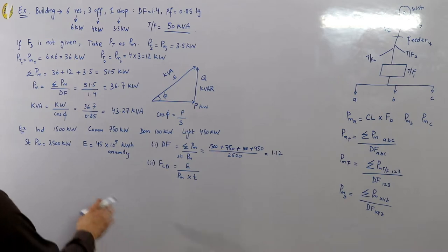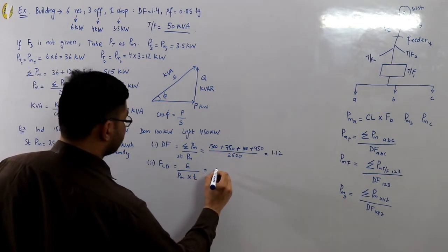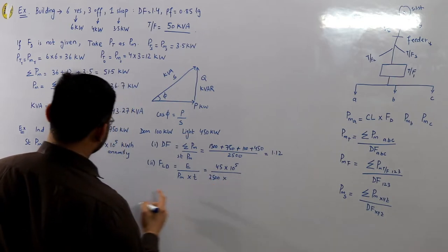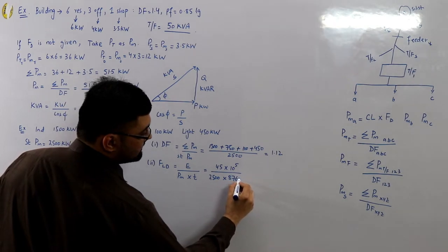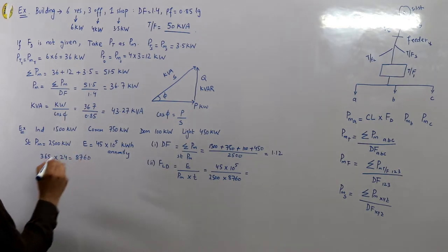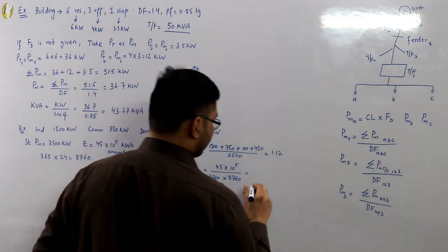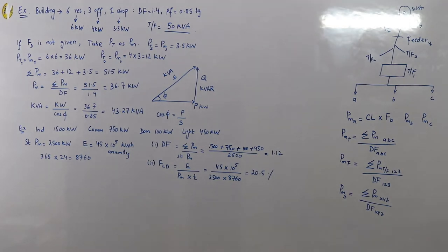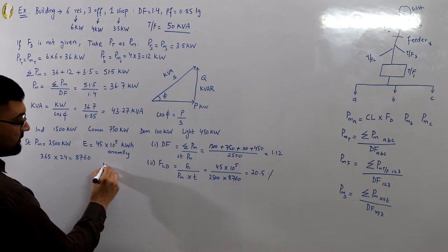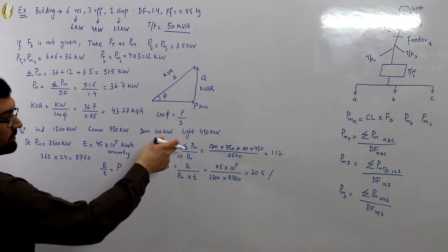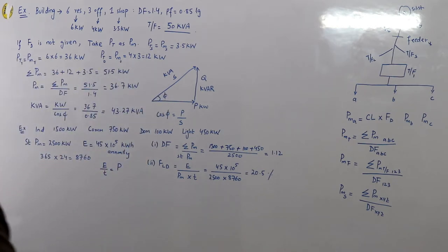For the load factor: energy ÷ (maximum demand × time). Energy is 45 × 10⁵ kWh, maximum demand is 2500 kW, and time is 8760 hours per year (365 × 24). The load factor comes out to be 20.5% — a very low value. Note: E ÷ T gives average load, so you can also find load factor as average load ÷ maximum demand.